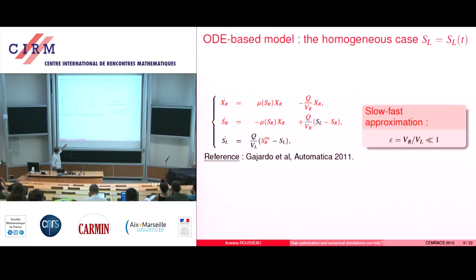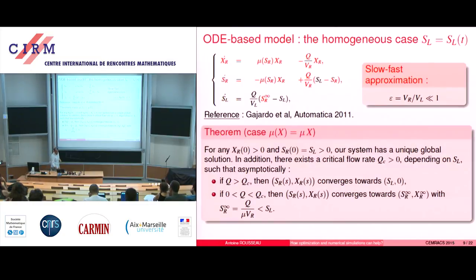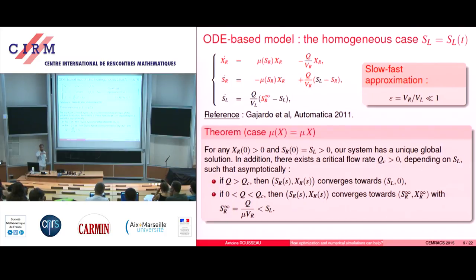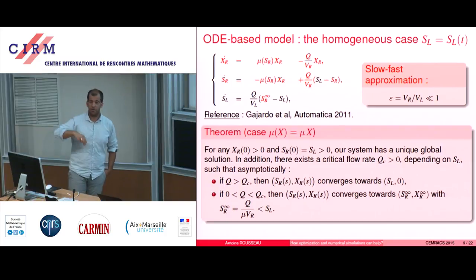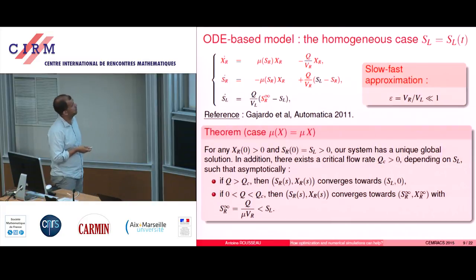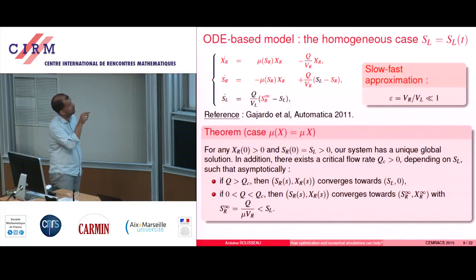So you have the paper of Pedro Garrardo from Chile and Alain Rapaport and other co-authors in Automatica. And the theorem in the case where, for the sake of simplicity, I took mu of x equals mu times x — so a linear growth. But you can have other laws much more realistic than this one. If you have positive initial conditions, of course, if you have no biomass or no pollution, nothing happens.